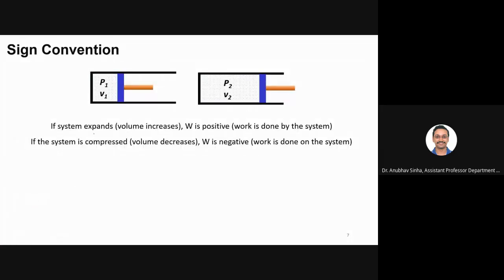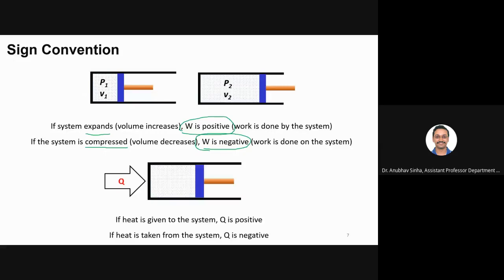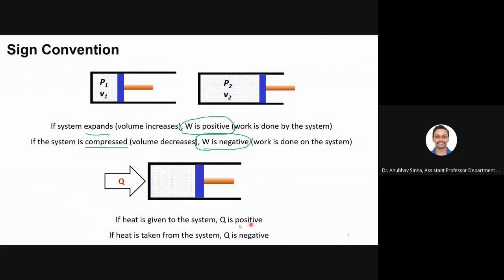Just remember: if the system expands, W is positive; if it is compressed, W is negative. That is the sign convention we are going to follow. Similarly for heat: if heat is supplied to the system, it is positive; if heat is taken out and you are cooling the system, then heat Q is negative. This is the sign convention we are going to follow.